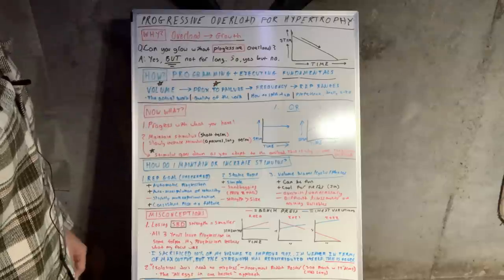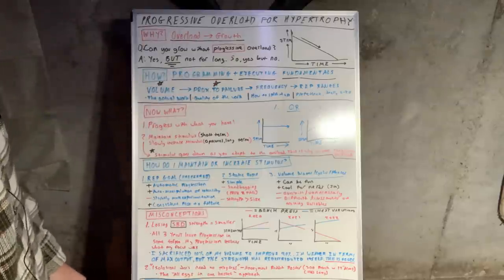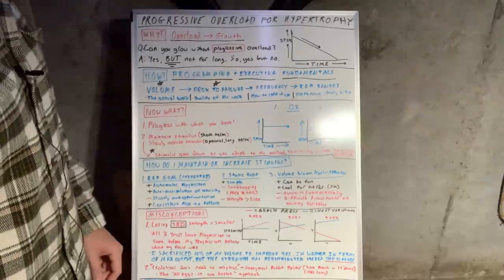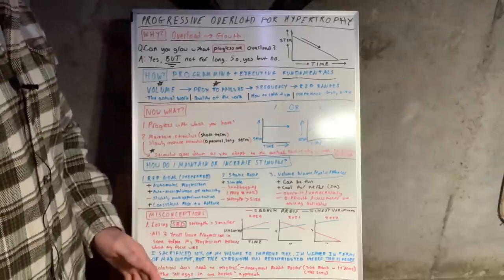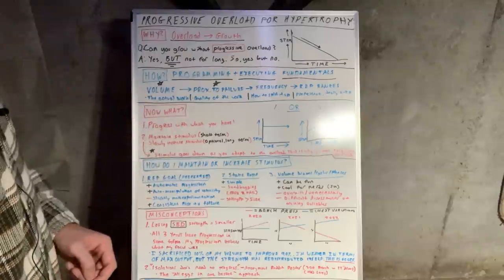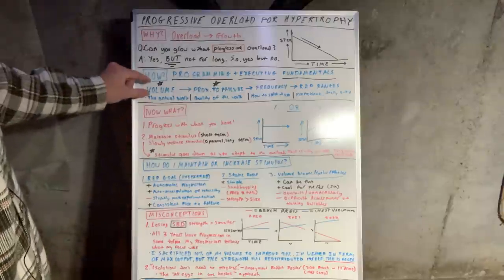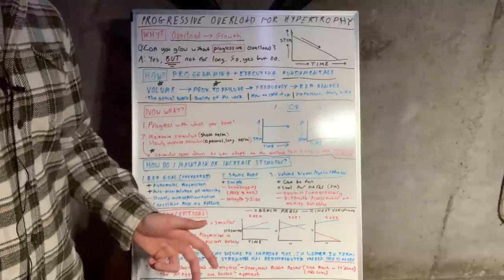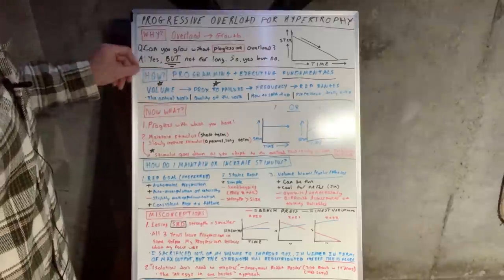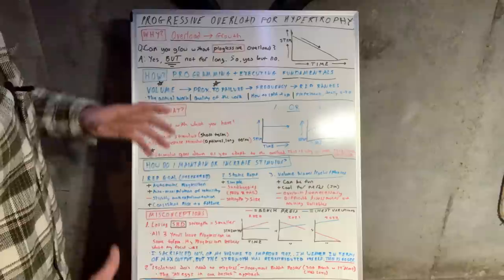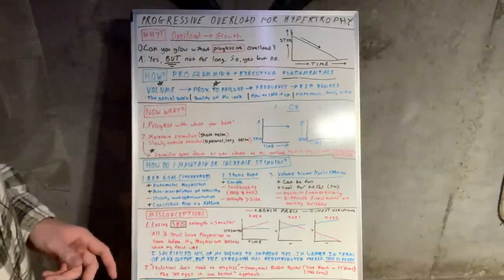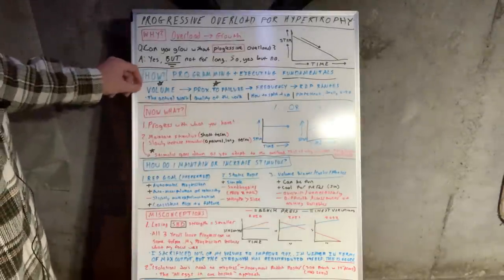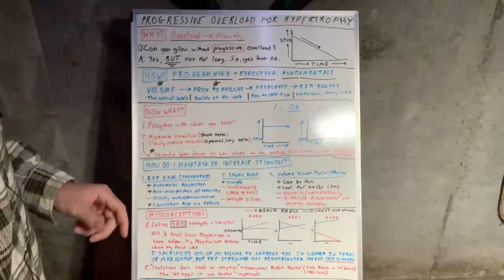So you have some people that get too caught up in the programming. They get caught up optimizing their program and they just don't execute. You have the other side of the spectrum, people that just execute but there's no actual programming behind it. These are people that program hop, spin their wheels. They might train hard, they might go consistently, but the programming isn't there and they're not getting the best results they could. That's why I have the plus sign here to connect the two. You have to learn how to program and learn how to execute the fundamentals of hypertrophy training.